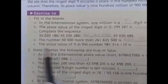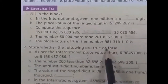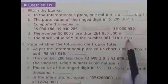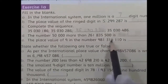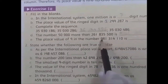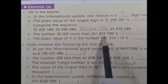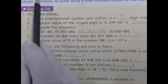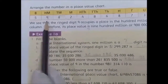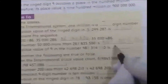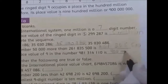Now, the place value of 9 in the number. It is a 9-digit number — counting: 1, 2, 3, 4, 5, 6, 7, 8, 9. The nine-digit number's place value is 100,000,000. So it is 900,000,000.